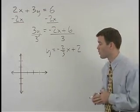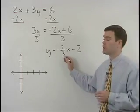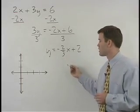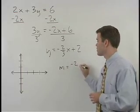Its slope, or m, is the coefficient of the x term, which in this case is negative 2 thirds.